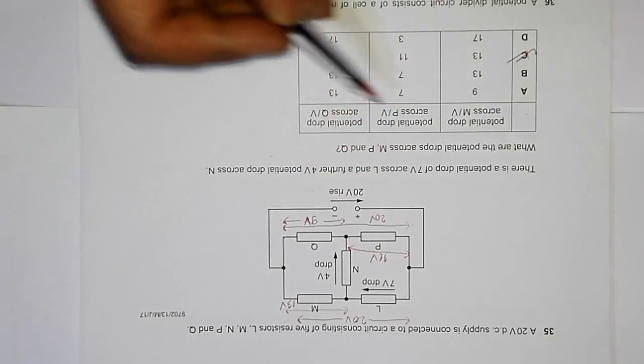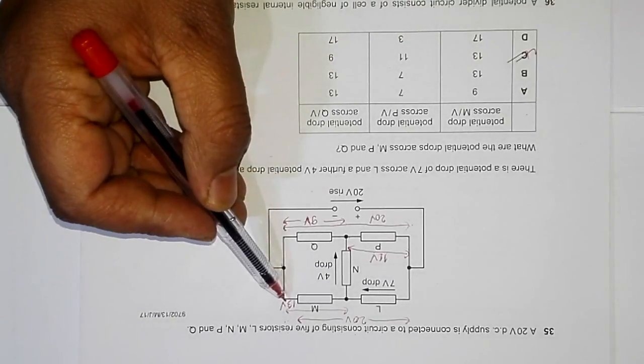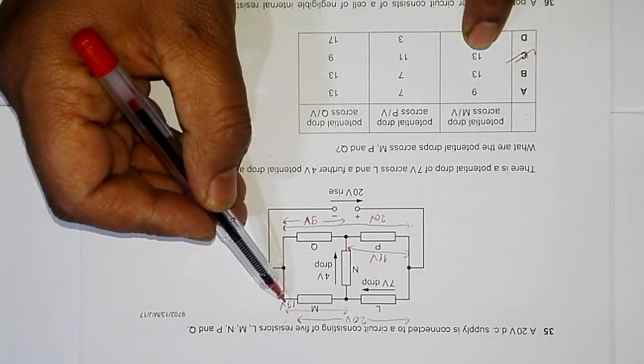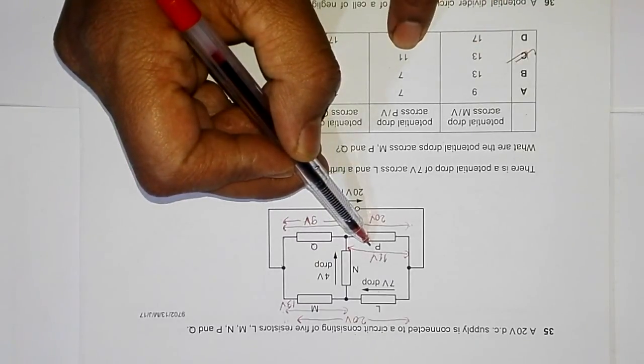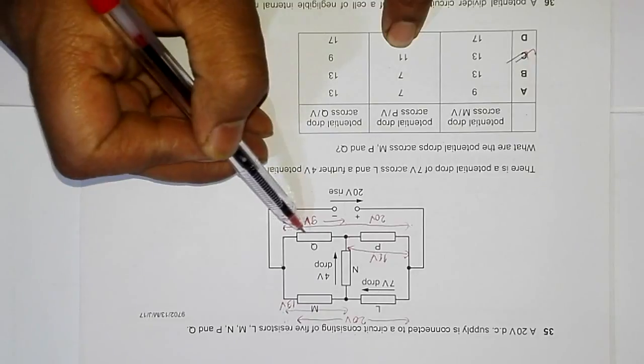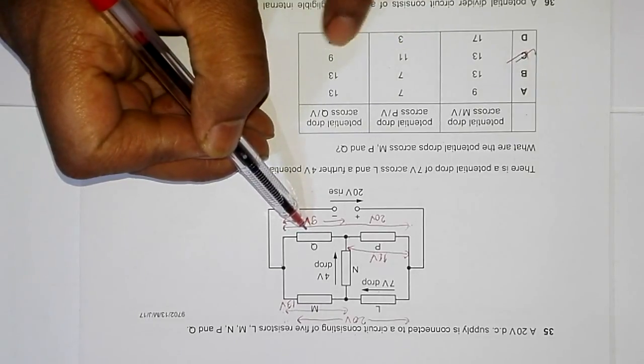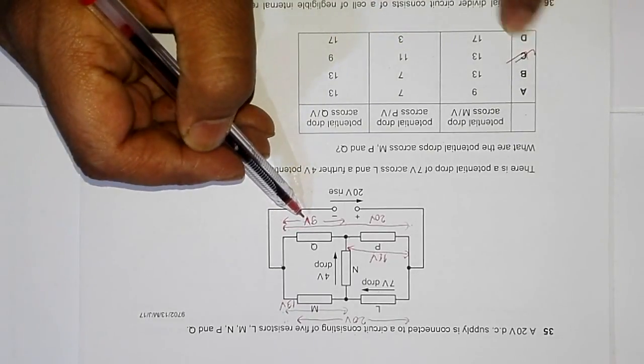Now across M is 13 volt, which leaves us with choice B and C. Across P is 11 volt, which leaves us with choice C. And across Q it is again 9 volt. So choice C is our correct answer.